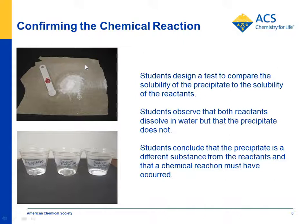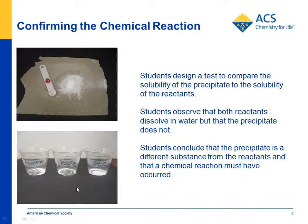You can ask students how they could determine whether the precipitate is different than the original reactants — calcium chloride and sodium bicarbonate. One idea is to use a solubility test: put the same amount of the precipitate, calcium chloride, and sodium bicarbonate in separate cups, then add the same amount of water to each and swirl them to see if there's a difference in dissolving. Students will see that the calcium chloride dissolves, the sodium bicarbonate will dissolve, but the precipitate does not — so it must have been a chemical reaction. The precipitate is definitely something different than the reactants.